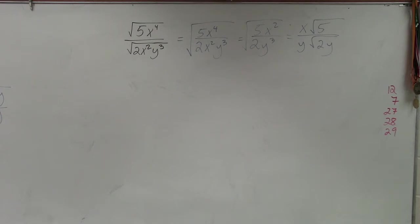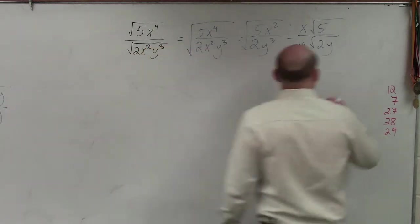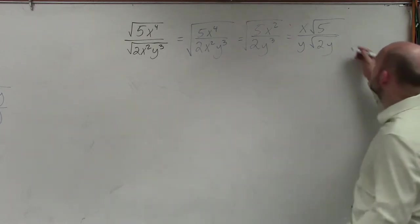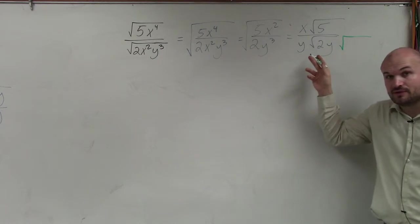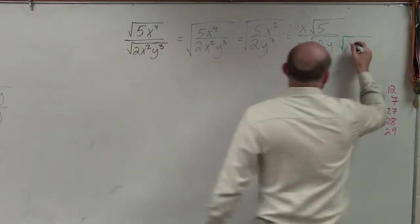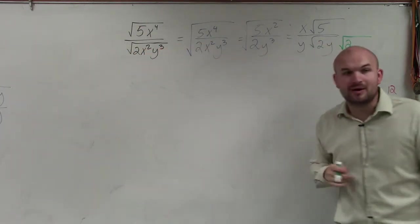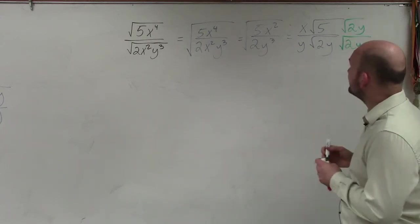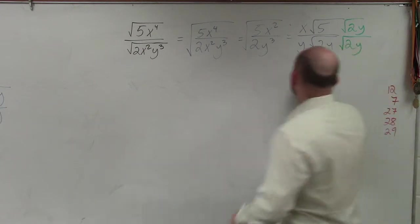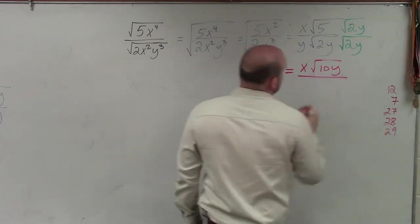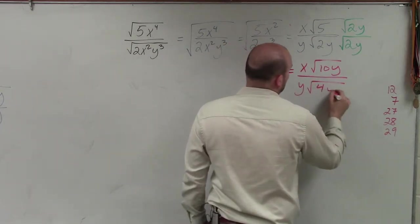Now, what I want you guys to understand is we cannot divide by a negative number. So therefore, what we're going to want to do is we're going to want to multiply it by a radical that's going to make this something we can take the square root of. For instance, I can't take the square root of 2, right? What could I multiply 2 by so I could take the square root of it? 2. I can't take the square root of y, but what could I multiply it by to get the square root? Y. So whatever I do on the top, I do on the bottom. And then what I end up having is x times the square root of 10y divided by y over 4y squared.